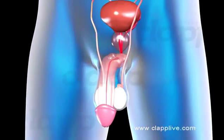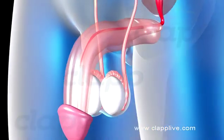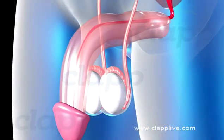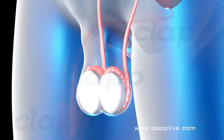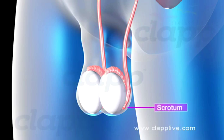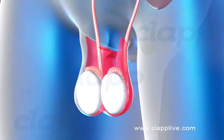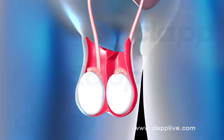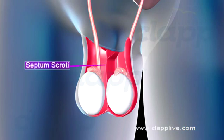Testes are the primary sex organ of the male and are suspended in the scrotal sacs. The scrotum is a pouch of pigmented skin arising from the lower abdominal wall and hanging between the legs. It is divided internally into right and left scrotal sacs by a muscular partition called the septum scrotae.